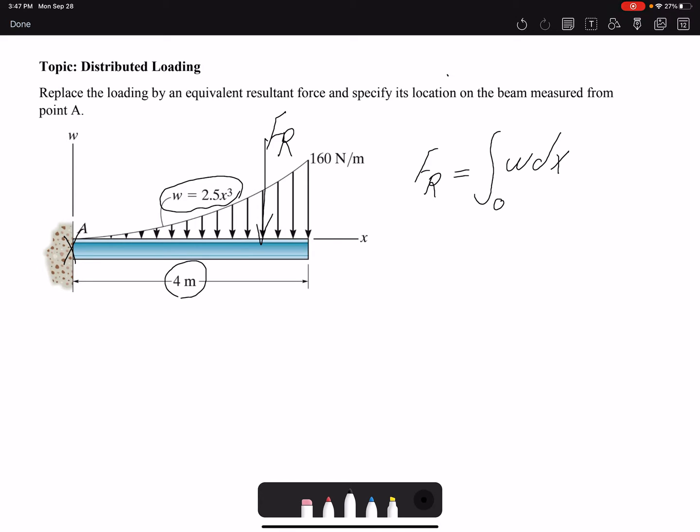So my function here is 2.5x³ dx. So x cubed would be 2.5x to the fourth divided by 4, replacing 0 and 4.